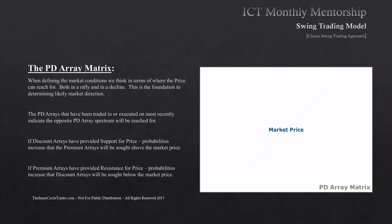Assume this is the market price — this could be in any asset class, but we're going to specifically talk about the Swiss franc on a monthly chart. In reference to current market price, we define the range we're presently in, and we look for the nearest bearish mitigation block above us and the nearest bullish mitigation block below. These arrays may not exist in current price action, but this is the spectrum you look through above and below the marketplace in this order.